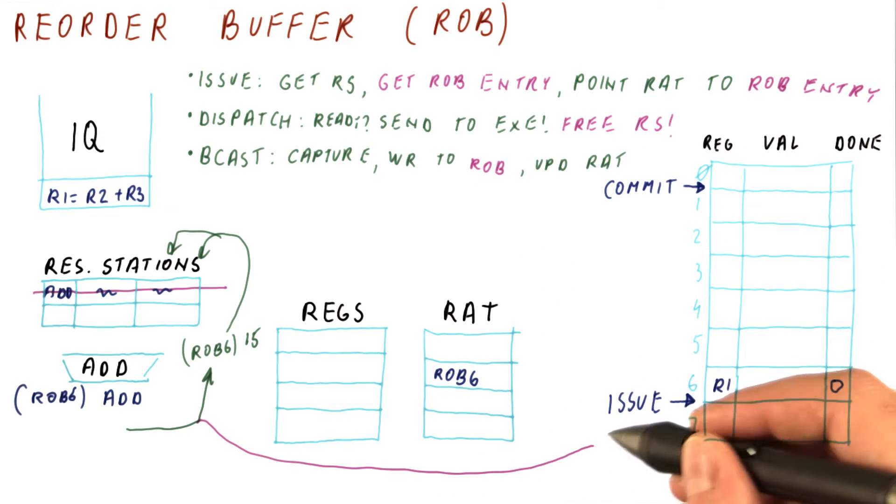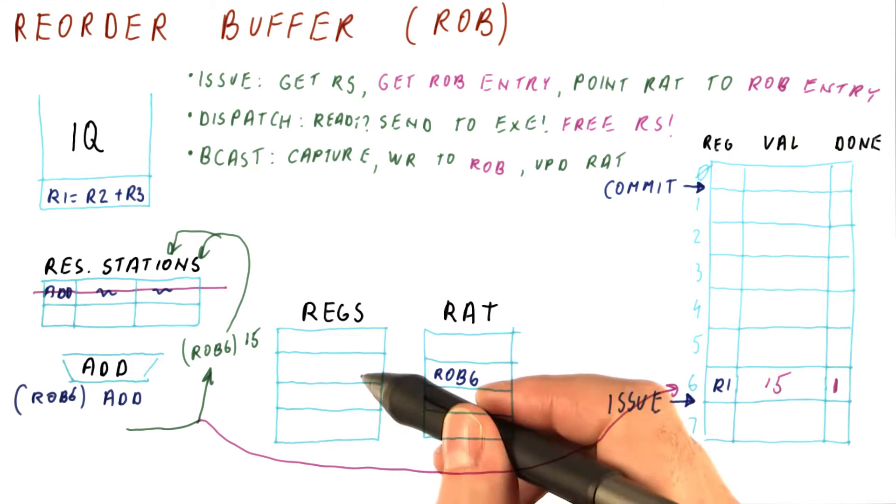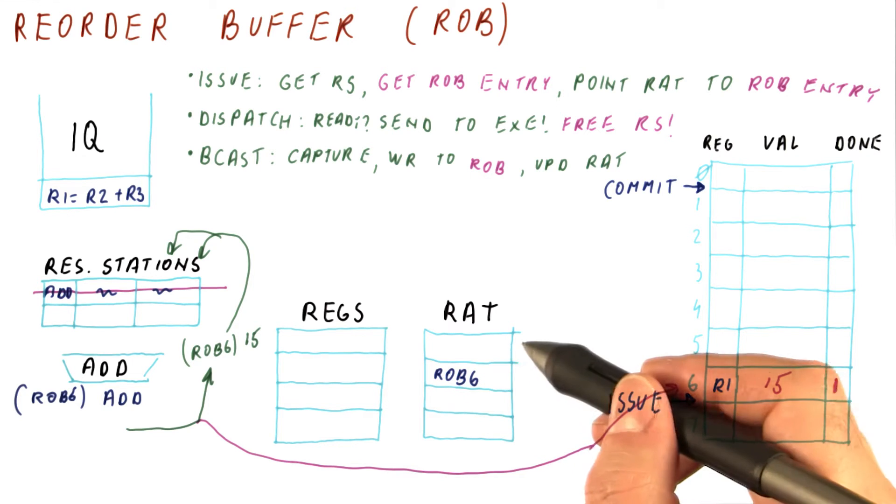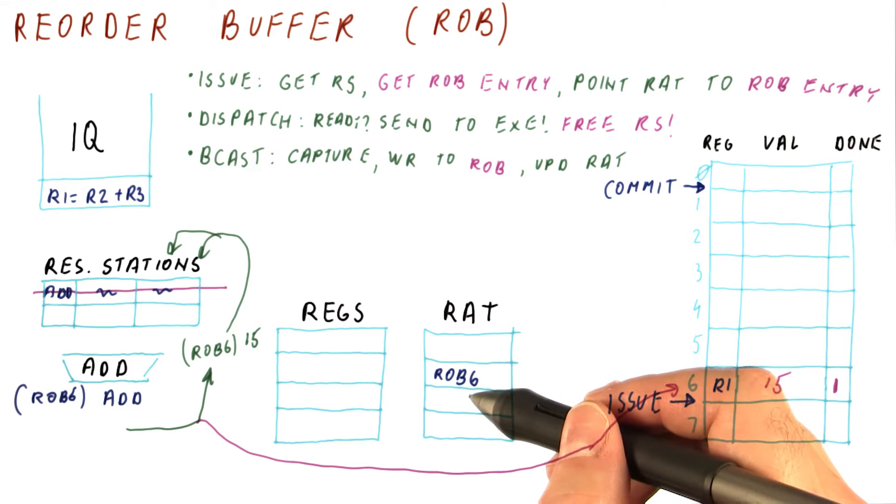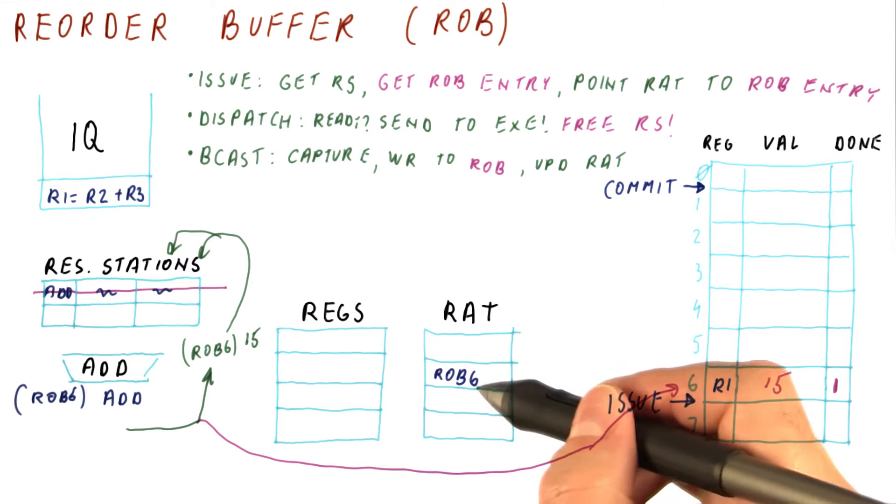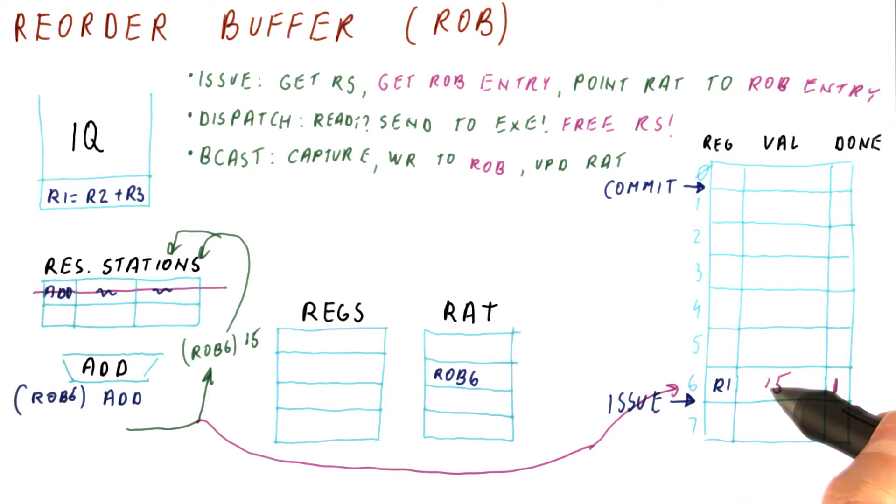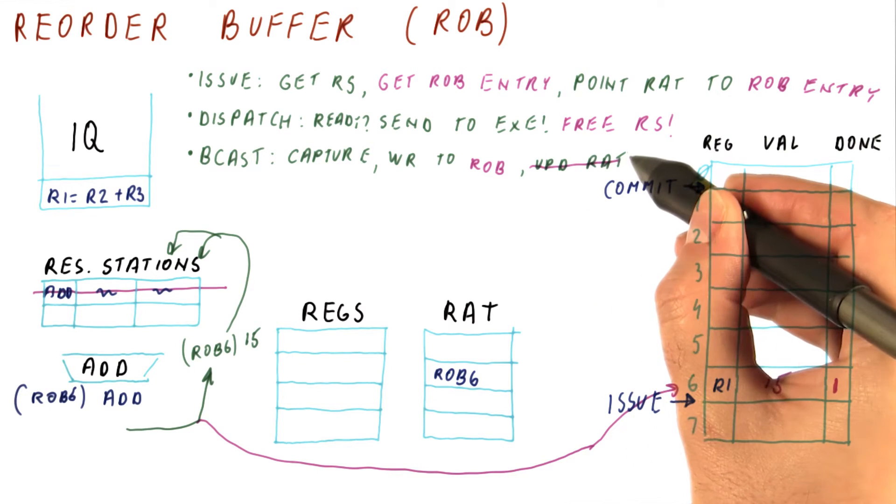So this broadcast value now goes to the ROB, and we write 15 here and mark the instruction as done. Also, the result of the instruction is not going to be in the register, so we do not update the RAT to point to the registers. In fact, the RAT is still pointing to the correct place. The result of the instruction is in the ROB now.